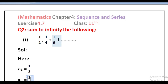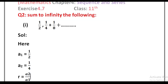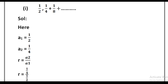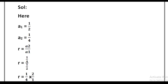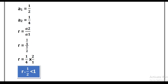Here the first term a1 is equal to 1 divided by 2, and a2 is equal to 1 divided by 4. r is the common ratio between a2 and a1. By putting the values, r is equal to (1/4) divided by (1/2), which gives r is equal to 1 divided by 2, which is less than 1.